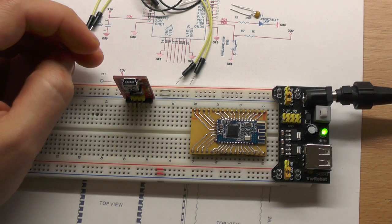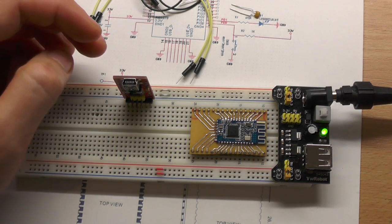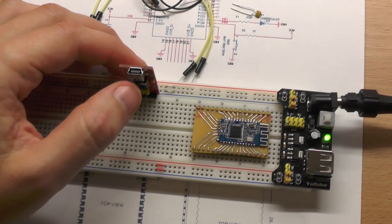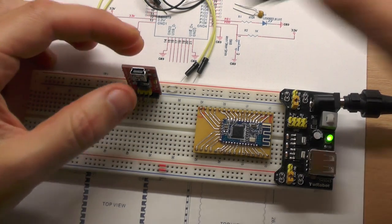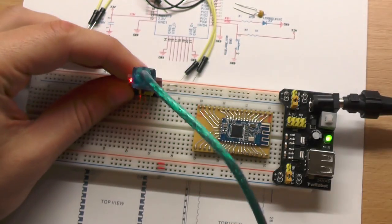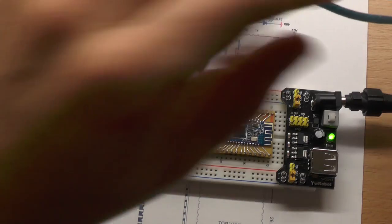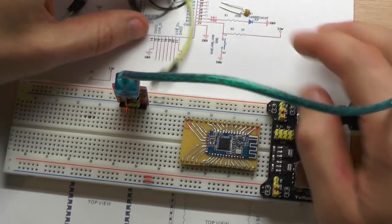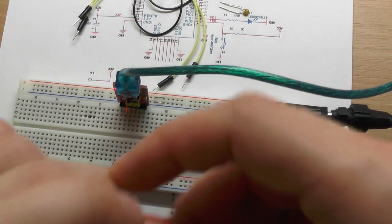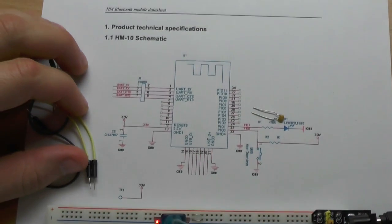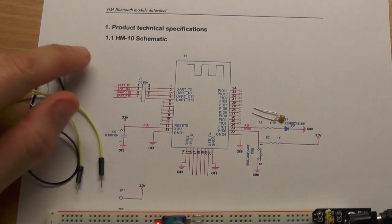Then we can also power this up just by connecting it to the computer and you can see it lights up already. And then we have to power up the module. I have the schematics of this HM-10 module here, how to wire this up for proper and regular operation.